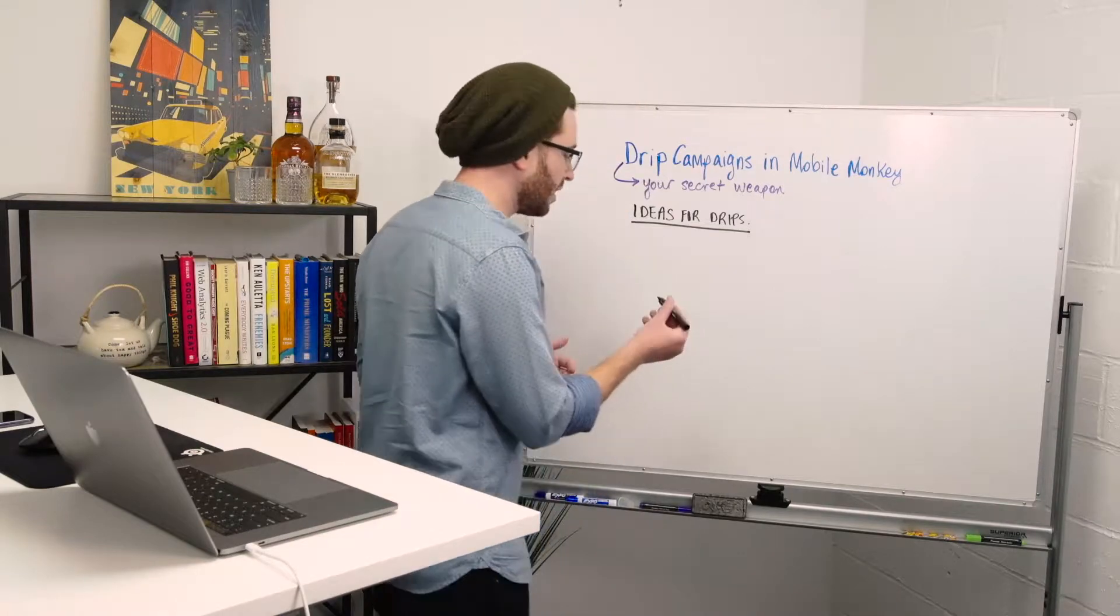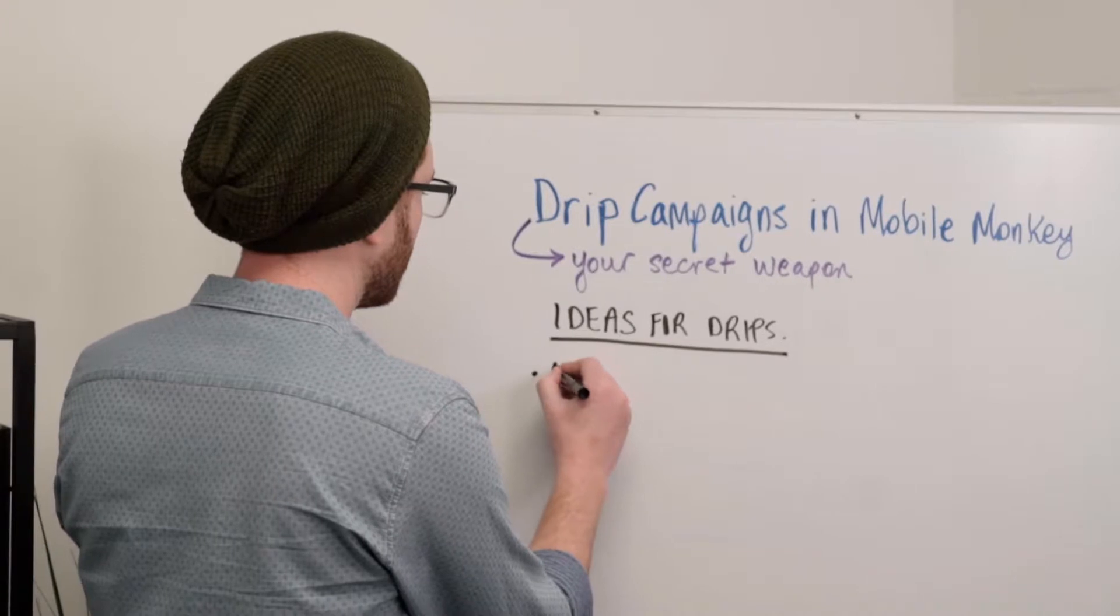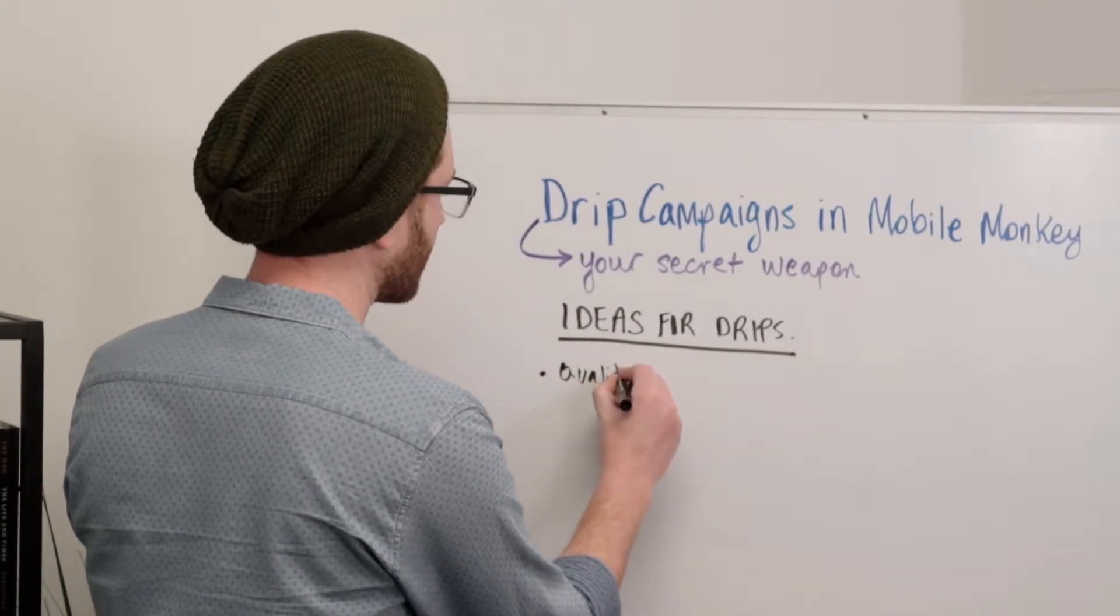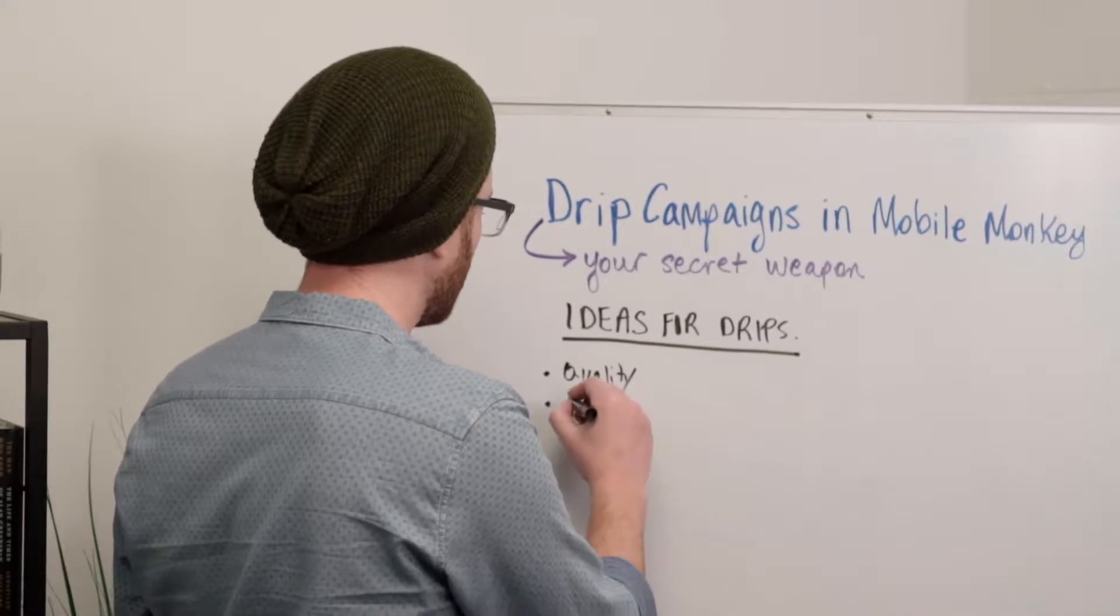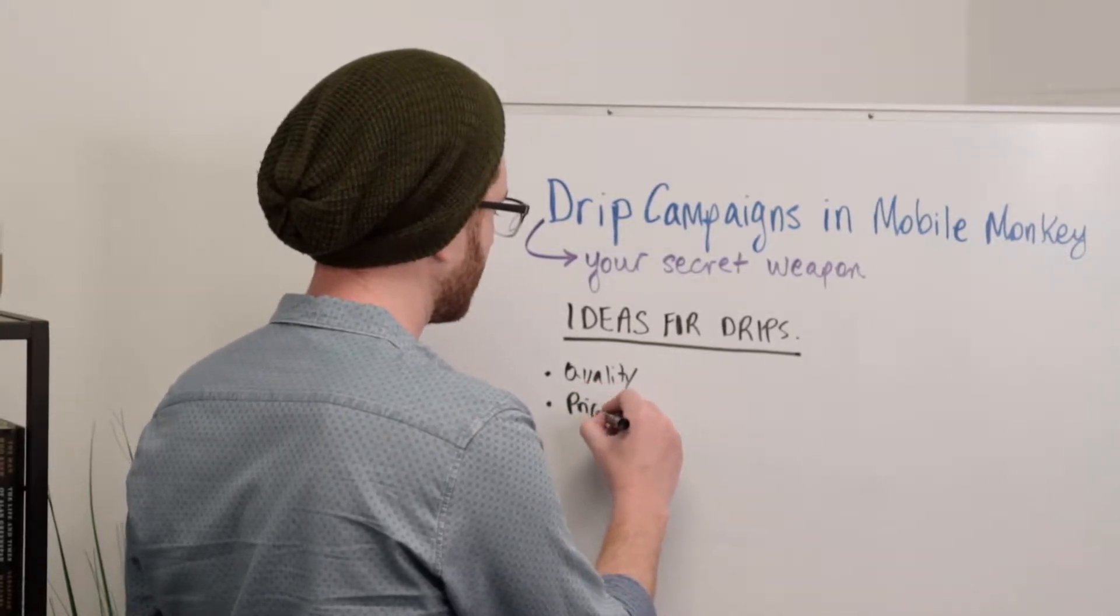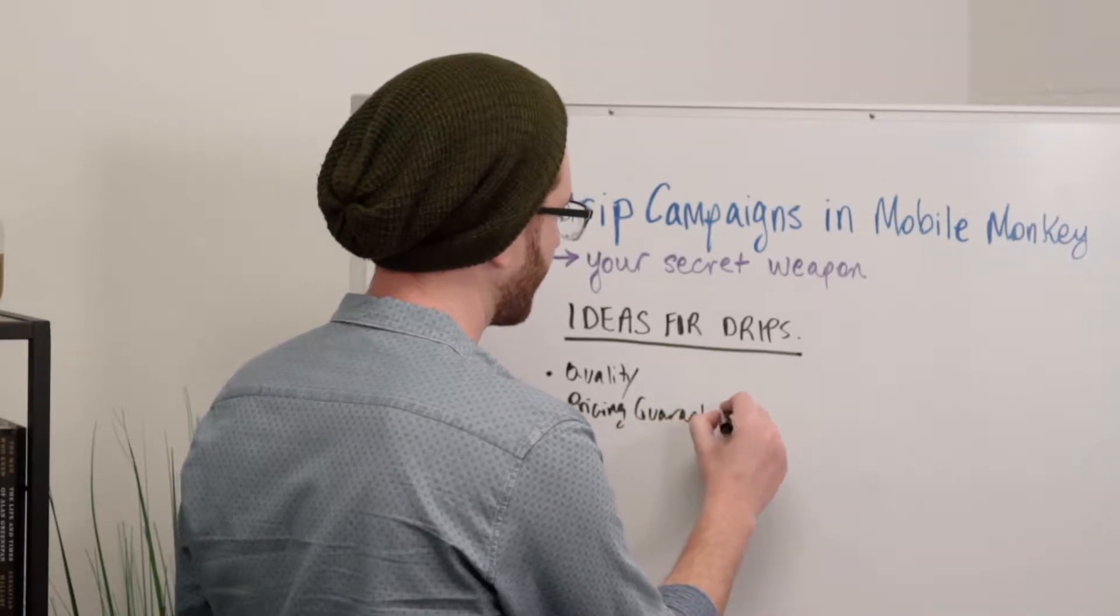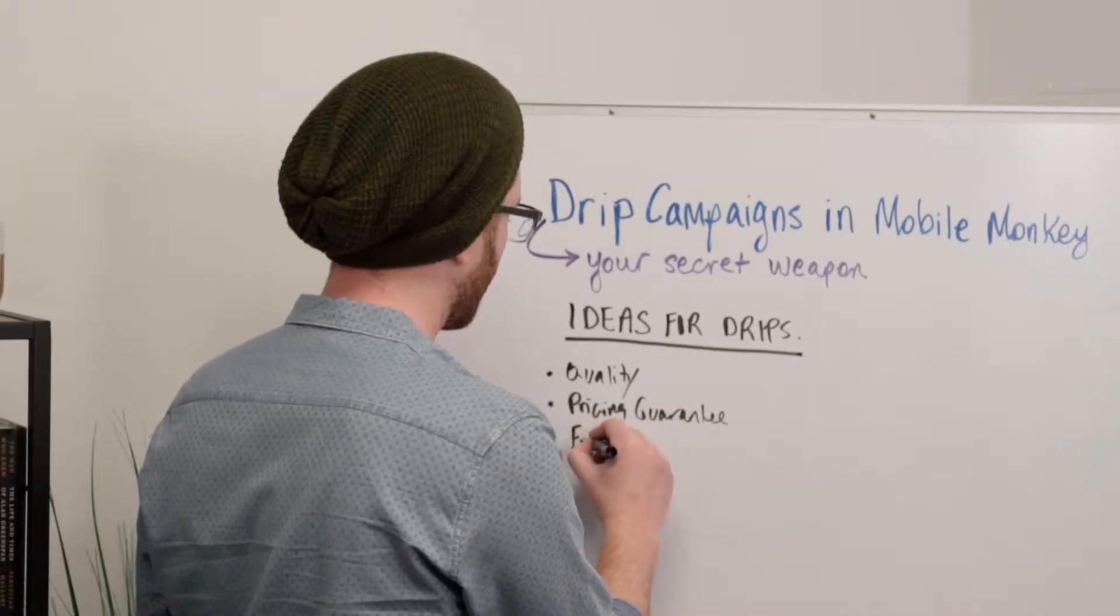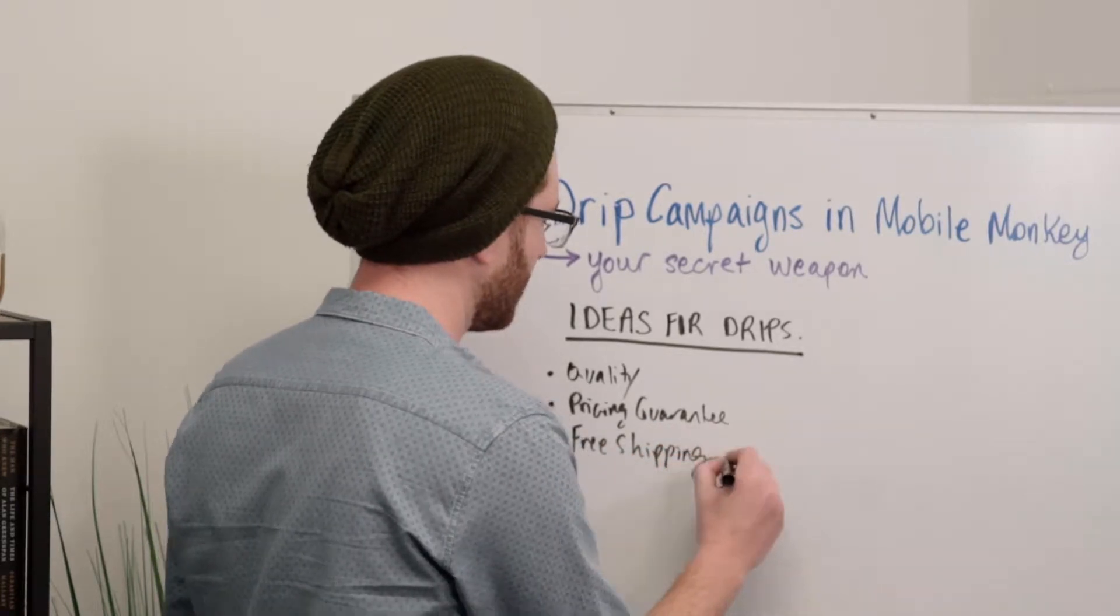So here are just some ideas. If you're an e-commerce company, you could talk about the quality of your products if you have something special going on for you in that regards. You could talk about pricing guarantees. If you offer free shipping. These are all good ideas that we've seen work very well in drip campaigns.